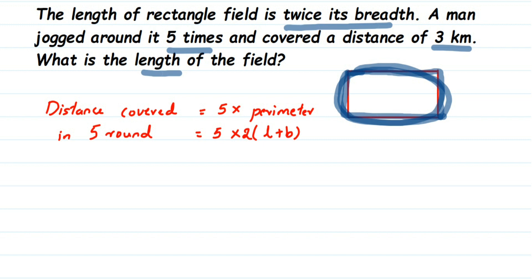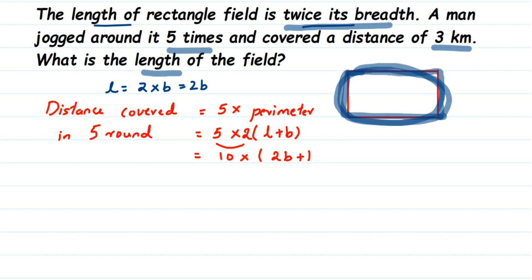We don't know length and breadth separately, but we have the relationship: length is twice its breadth, so l = 2b. Substituting in place of l, we put 2b. So this becomes five into two, which is ten, into (2b + b), which is 3b. So this becomes ten multiplied by 3b, which equals 30b.